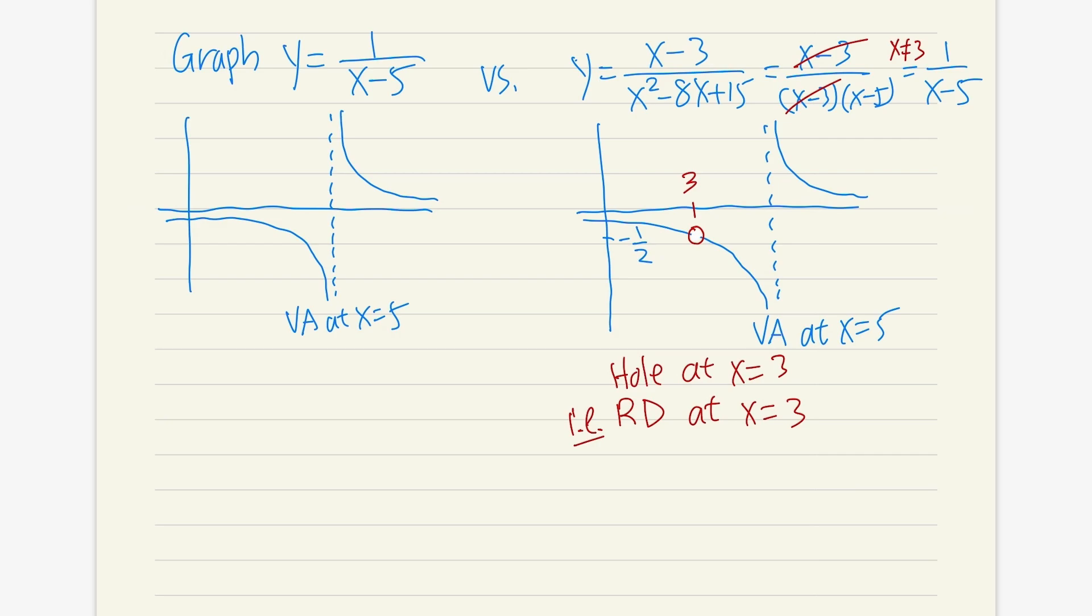And finally, to end this example, I think it's proper for us to talk about the domain and also the range for this function right here. So the domain for this right here is that x cannot be equal to 3 and x cannot be equal to 5.